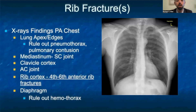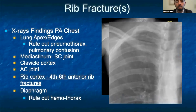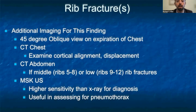The first imaging you may obtain with rib fractures is the PA view of the chest. When we examine this x-ray, we see that there are cortical discontinuities in the anterior portion of the fourth, fifth, and sixth ribs, but no displacement. Rib fractures are often not seen on a PA view of the chest and may require a 45-degree oblique view on expiration to best diagnose.